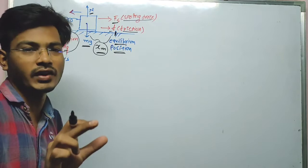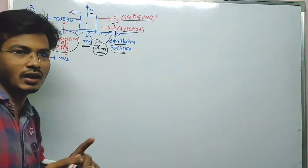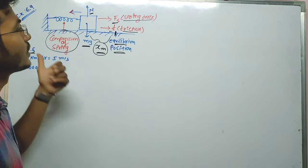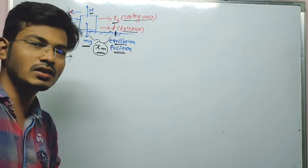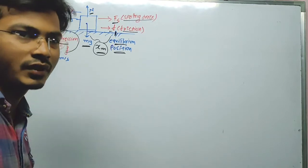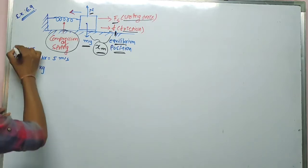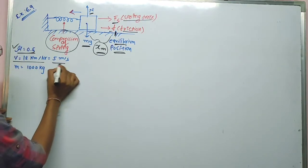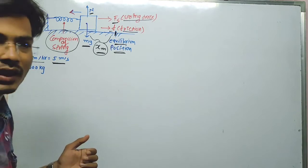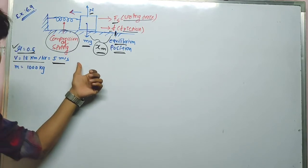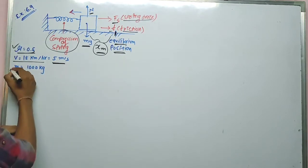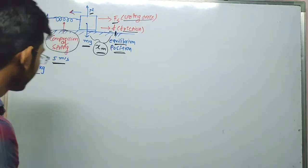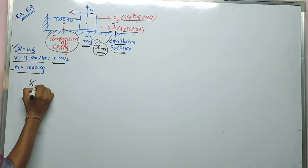In the previous example we already found the value of xm, but at that time we were not considering the coefficient of friction mu. Now we have to consider it. Given data includes mu, and we need to talk about the kinetic energy approach.